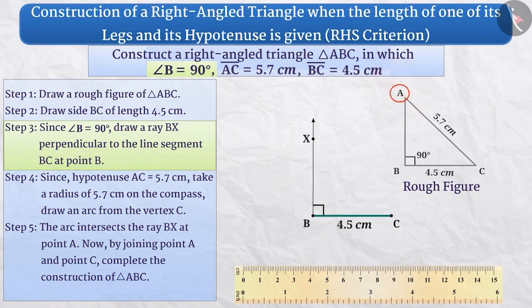Where should the point A be situated on the ray BX? Can you tell how to find the position of the point A? Think for a while. You got it right. We know that hypotenuse AC is equal to 5.7 cm. Let's get the position of the point A with the help of this.